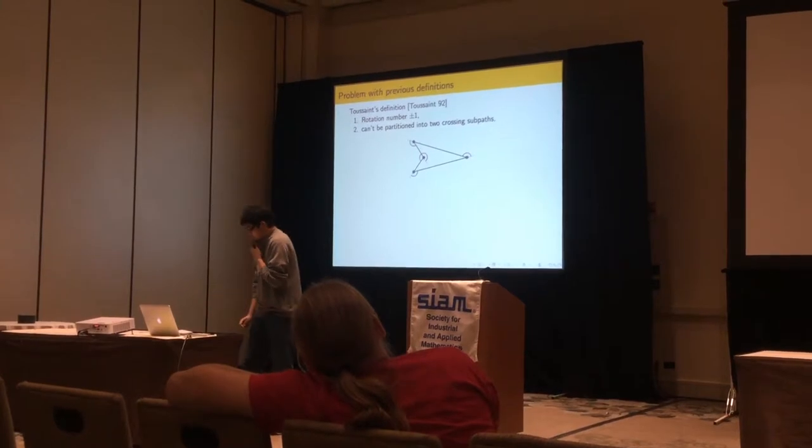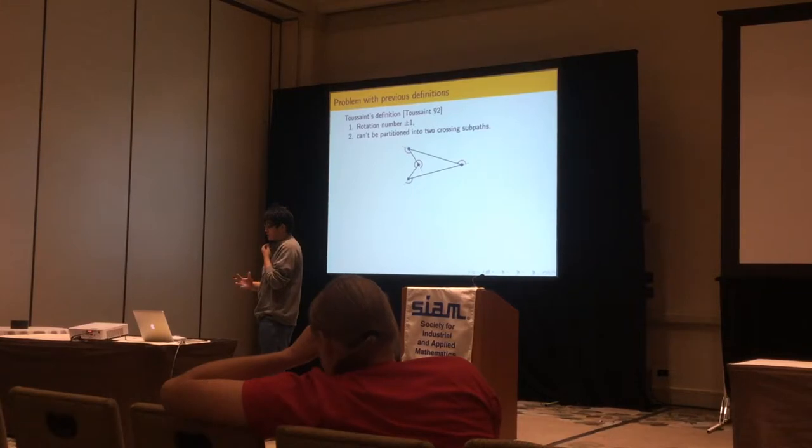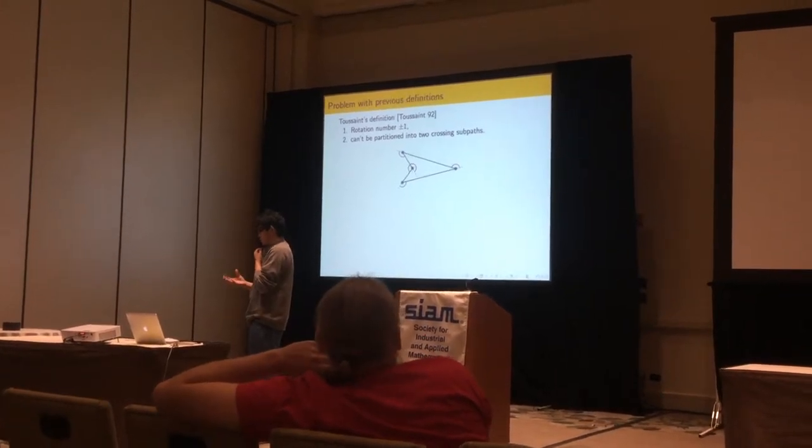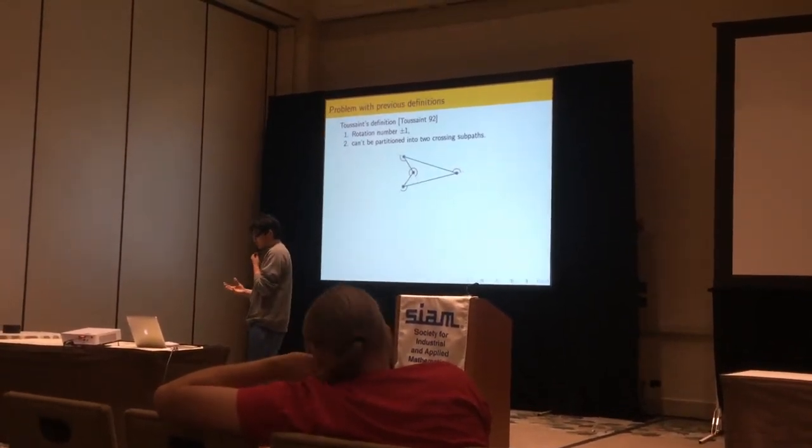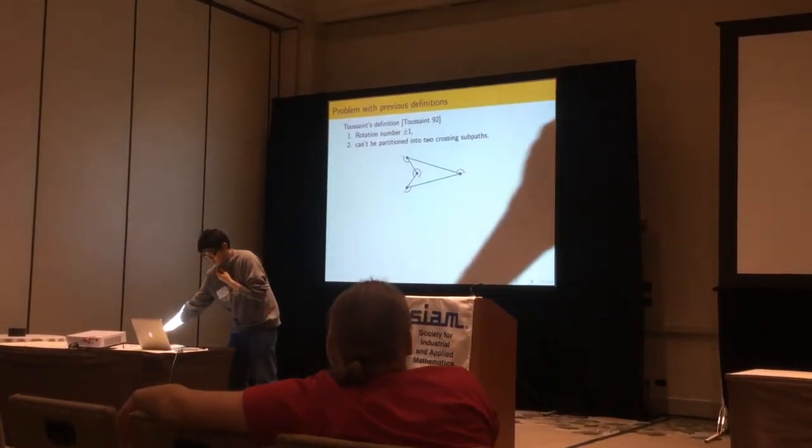The rotation number is the sum of the exterior angles, where the angles are normalized to negative pi to pi. So this is a polygon with rotation number plus or minus 1.